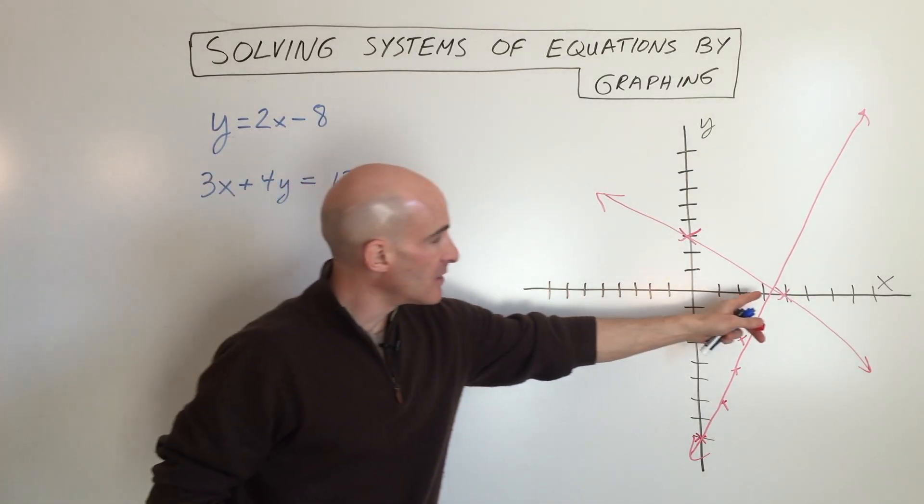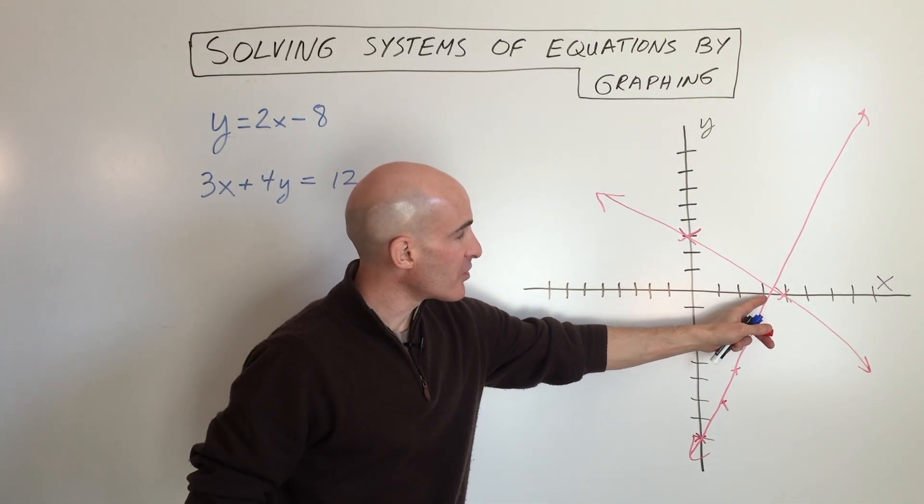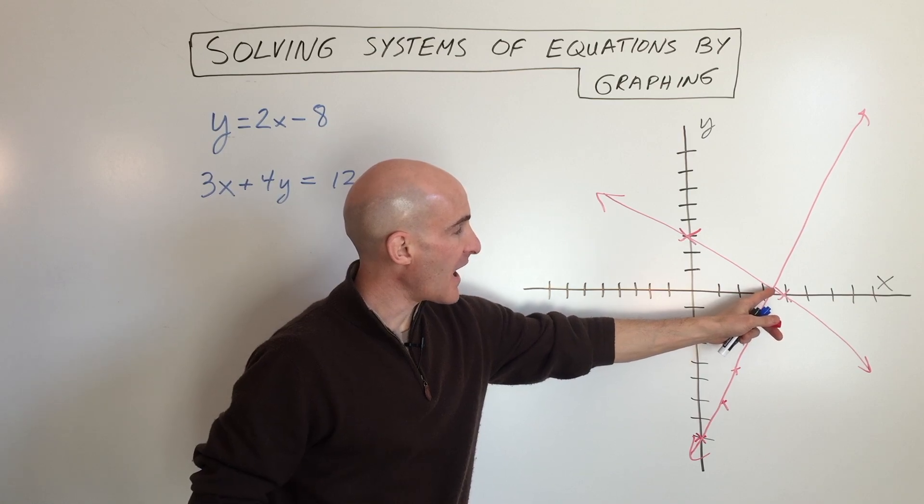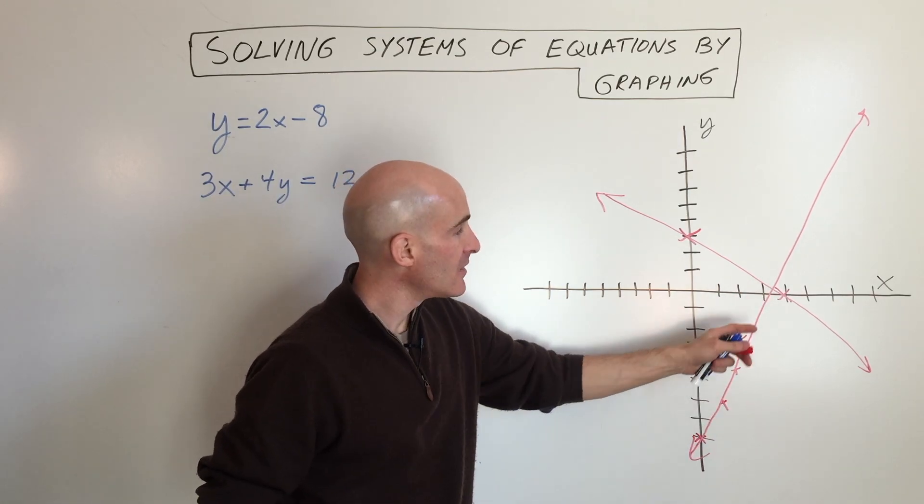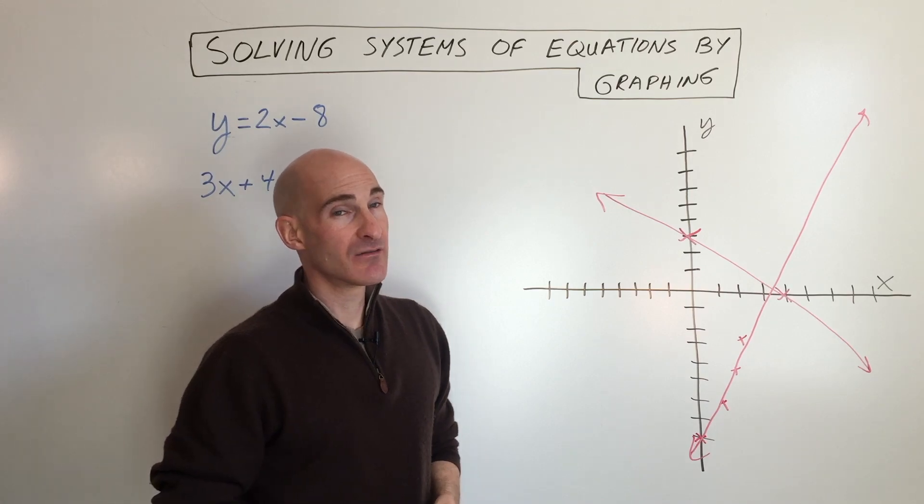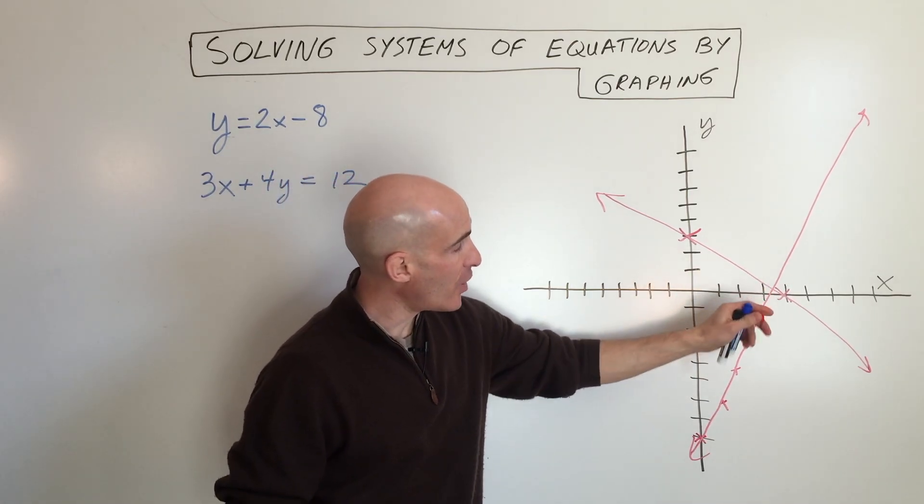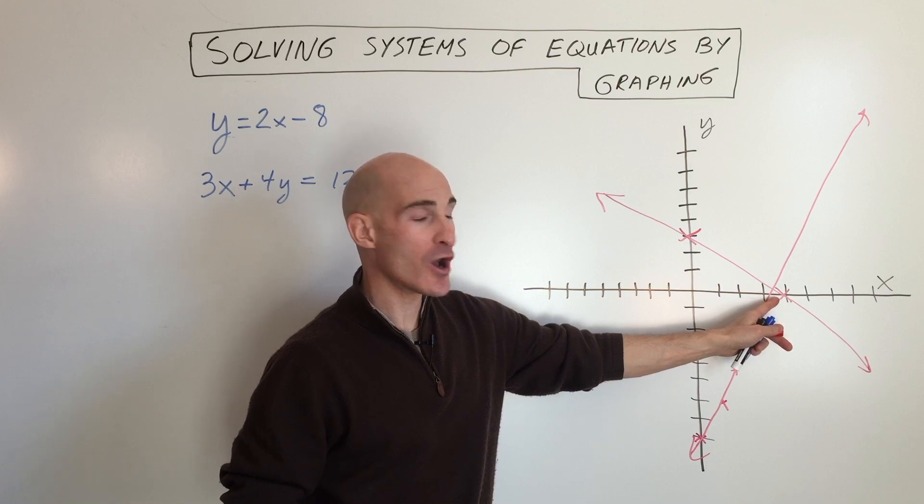Now, it looks like they're crossing somewhere right around here at three and a half comma one half, and this is the downside to the graphing method - if your line's a little bit off, your point of intersection is going to be a little bit off.